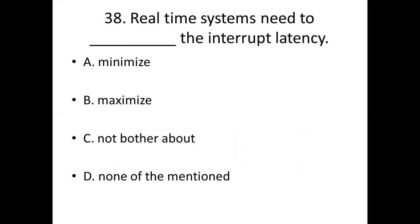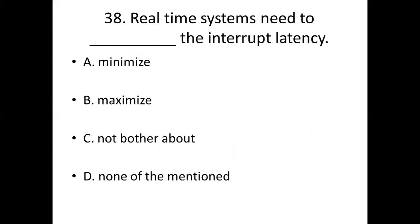Thirty-eighth bit. Real-time systems need to dash the interrupt latency. Option A: Minimize. Option B: Maximize. Option C: Not bother about. Option D: None of the mentioned. Answer: Option A, Minimize.